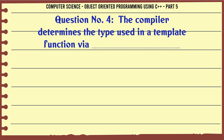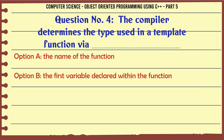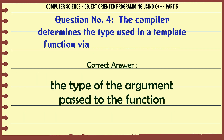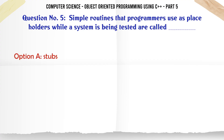The compiler determines the type used in a template function via. A. The name of the function. B. The first variable declared within the function. C. The type of the argument passed to the function. D. The type of the value returned from the function. The correct answer is: The type of the argument passed to the function.